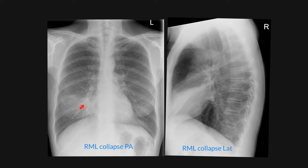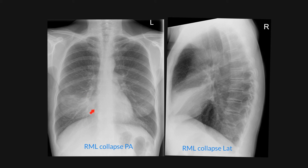Note also that the ribs are not as horizontal posteriorly as they are with the pectus excavatum, nor are the anterior ribs in an oblique fashion. The main differential diagnosis on the PA film is of a middle lobe collapse.